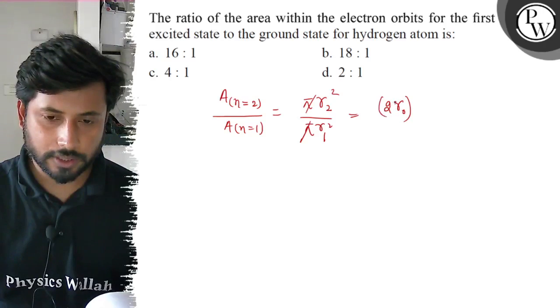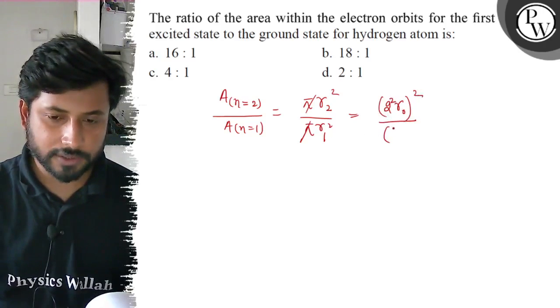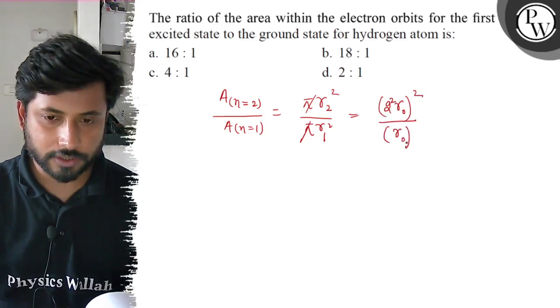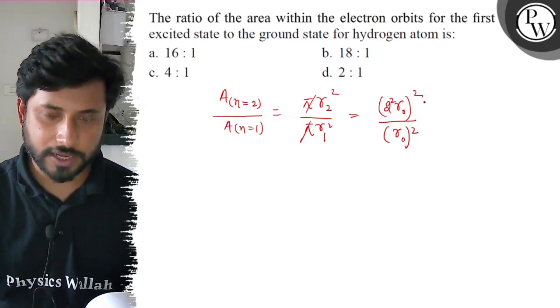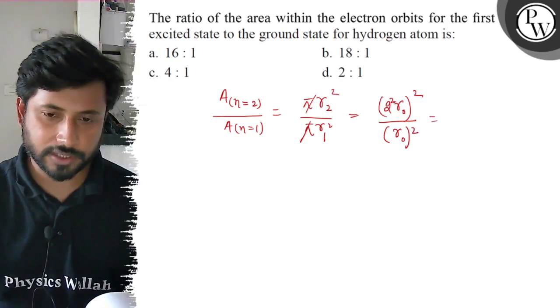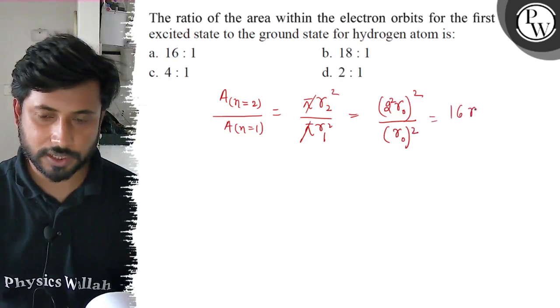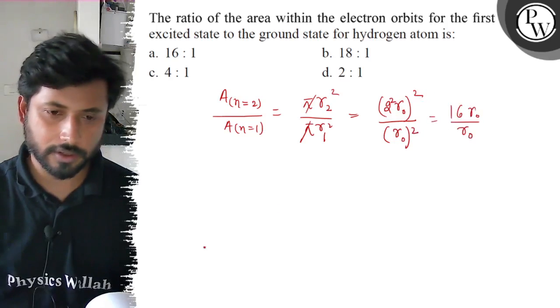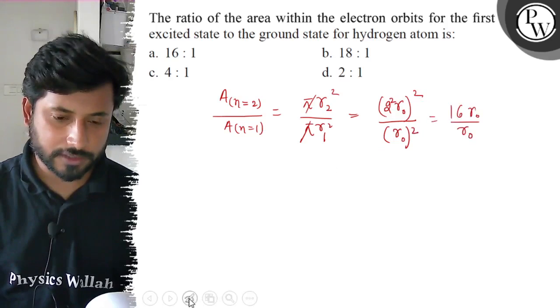n squared r0, that's 2 squared times r0 squared, divided by r1 squared. r1 will be r0 squared. r0 squared cancels with r0 squared, and 2 squared is 4, so 4 squared is 16 r0 divided by r0. r0 cancels with r0.